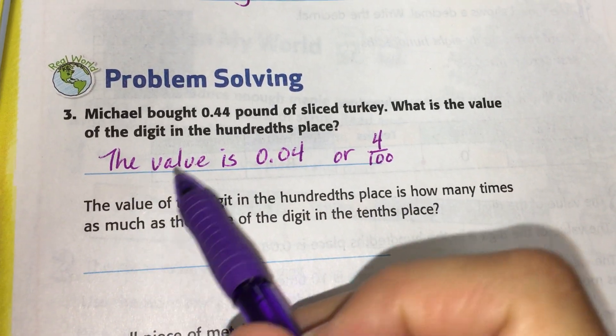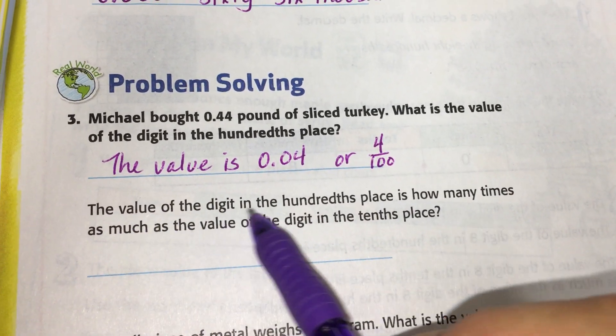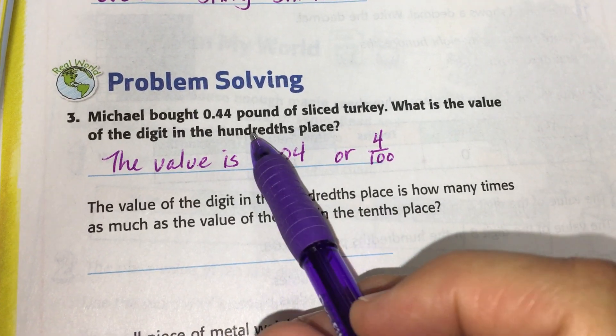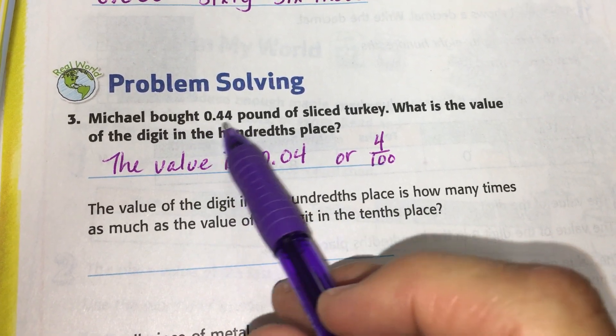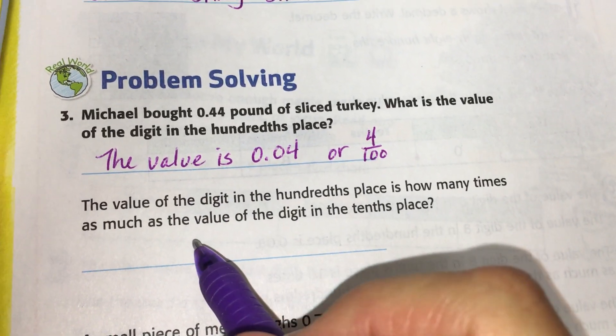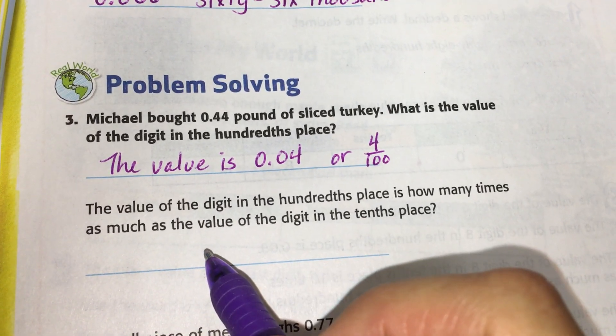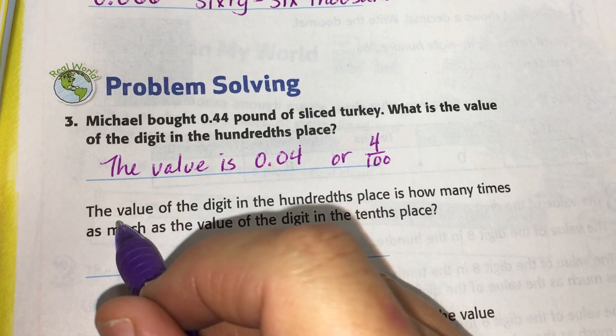So this is what you have to answer and it's related to this decimal right up here. So it says the value of the digit in the hundredths place, I'm going to underline this whole thing.